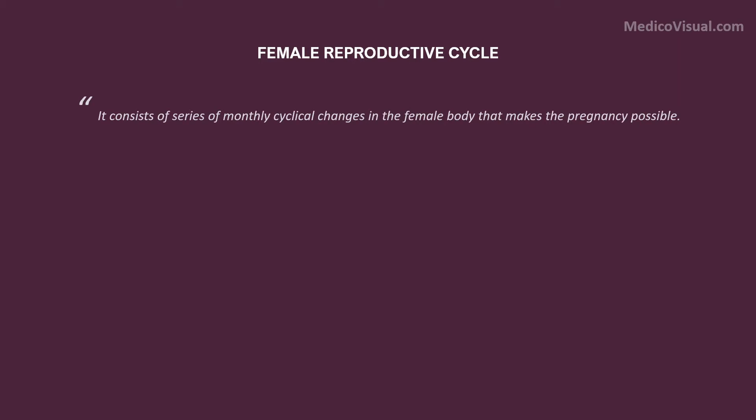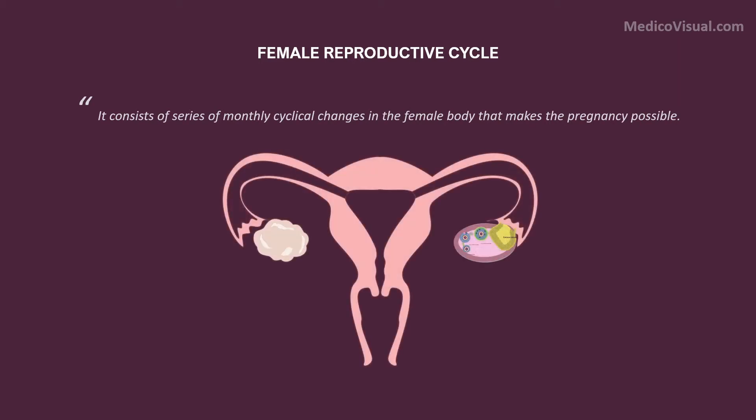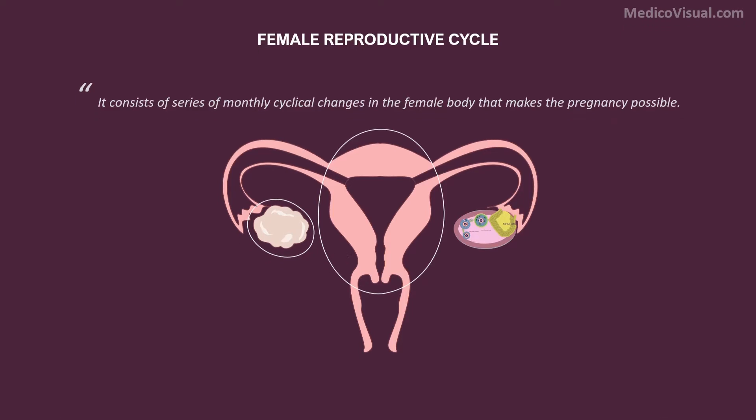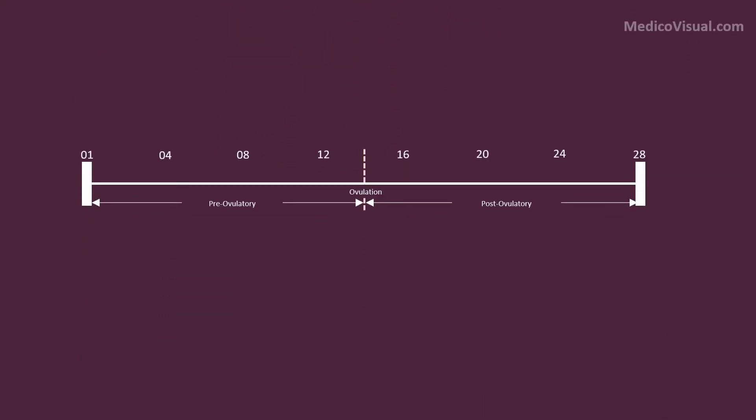The female reproductive cycle consists of a series of monthly cyclical changes in the female body that makes pregnancy possible. It consists of two cycles that are going side by side: the uterine cycle and the ovarian cycle.